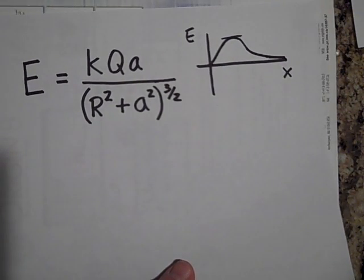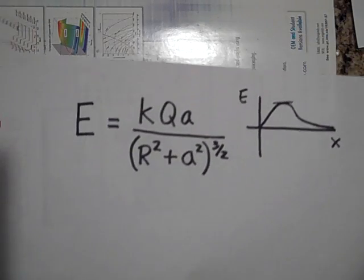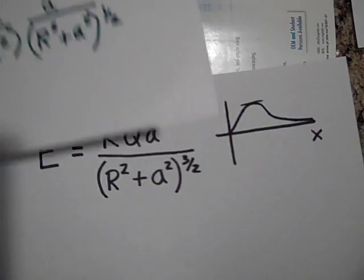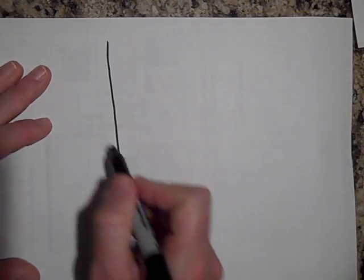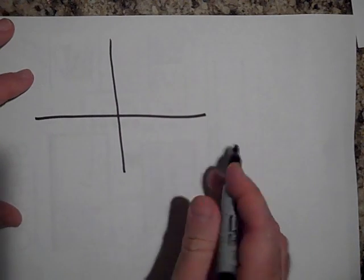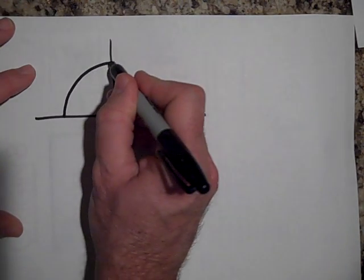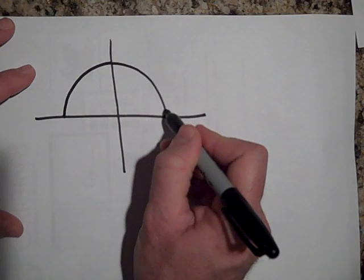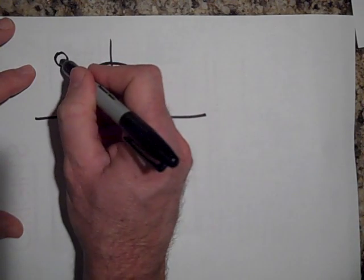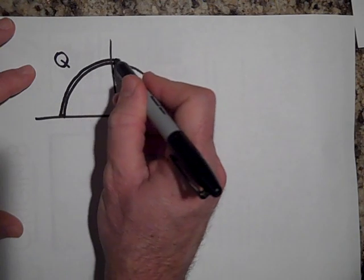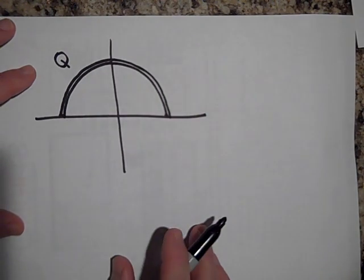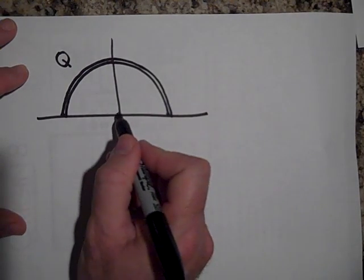Okay. I'd like to do the electric field at the center of a semicircular charge right now. And so that's a little bit like what we are talking about. Let's put a coordinate system here. And let's have a semicircular charge here.